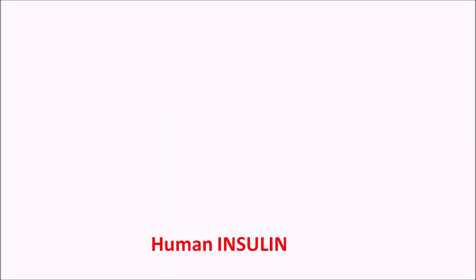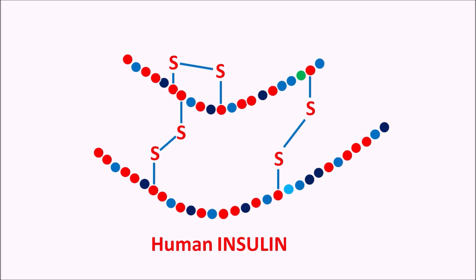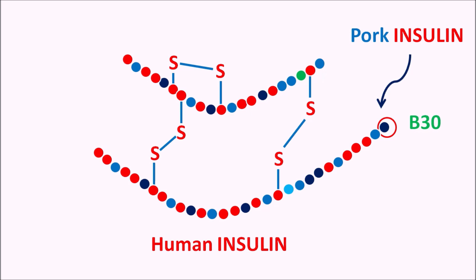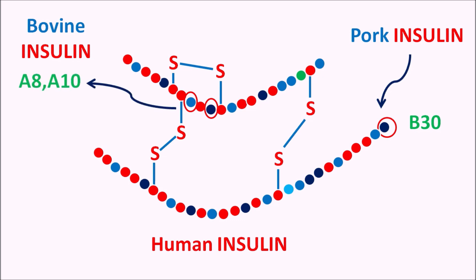Human insulin is a dimeric protein. This insulin can also be obtained from animal sources. For instance, pork insulin is somewhat similar to human insulin except in one amino acid — it differs at the 30th amino acid within the B chain. Similarly, bovine insulin differs in three amino acids: one at B30, and two amino acids at positions A8 and A10.